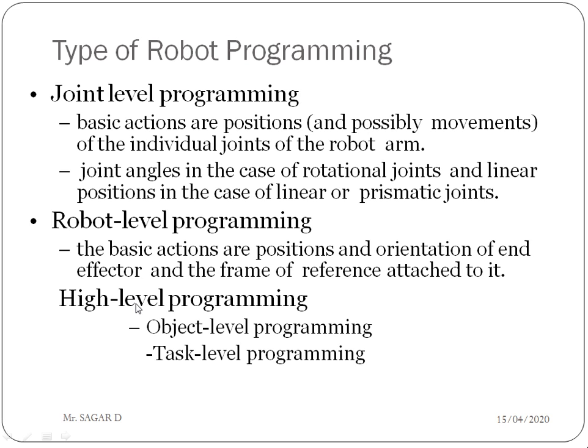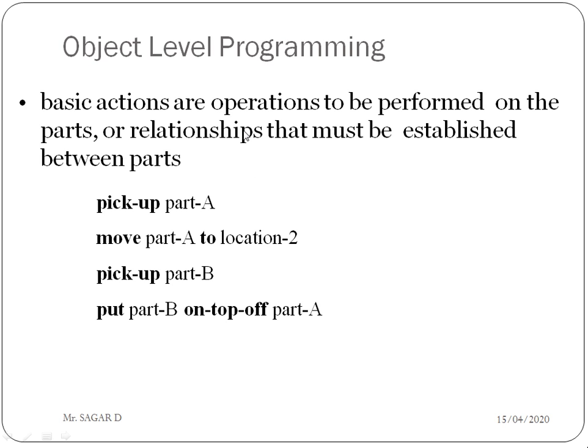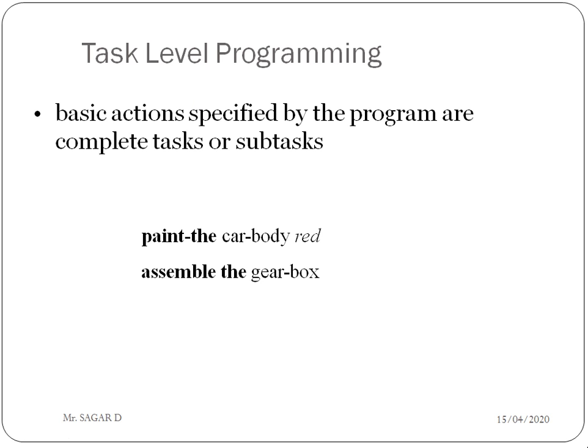The third type is high level programming, which is subdivided into object level and task level programming. In object level programming, the basic actions are operations to be performed on parts, or relationships that must be established between parts — like picking an object or moving an object from one location to another. In task level programming, the basic actions are complete tasks or subtasks, like painting a car, assembling a gearbox, or drilling something.